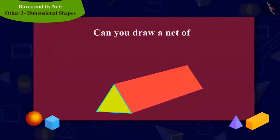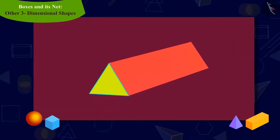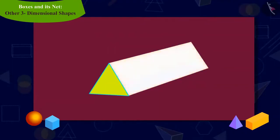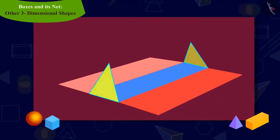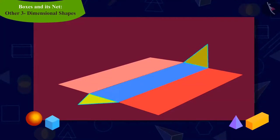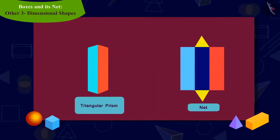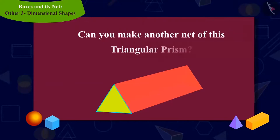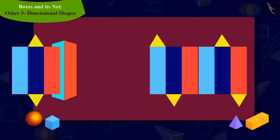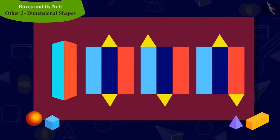Can you draw the shape of the net of this triangular prism? Let us open the prism. By opening the right rectangular face, we can begin to draw the shape of a net. Then we can open the left rectangular face, and finally open both the remaining triangular faces to form the net of a triangular prism. Kids, can you make another shape of a net of a triangular prism? You can pause the video to find the answer. You can also make a shape of a net of a triangular prism in these ways.